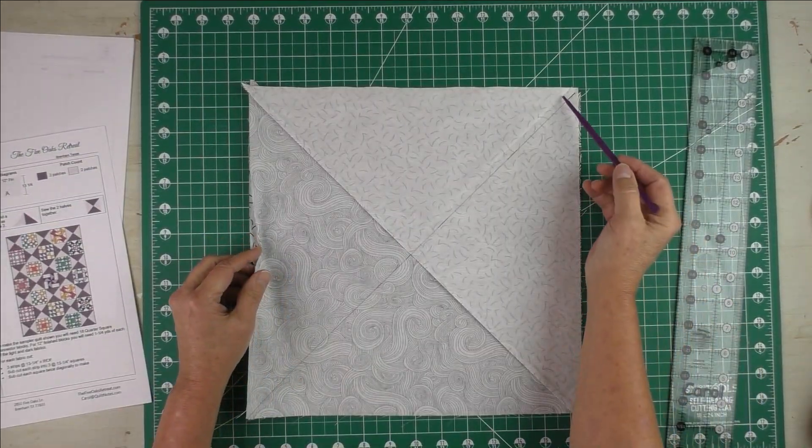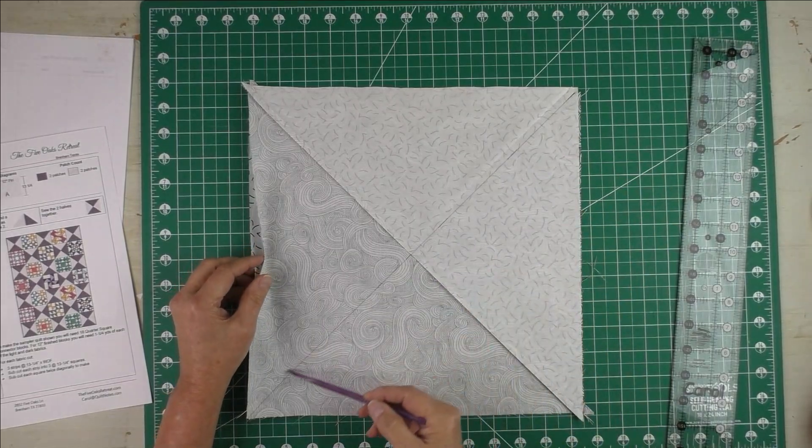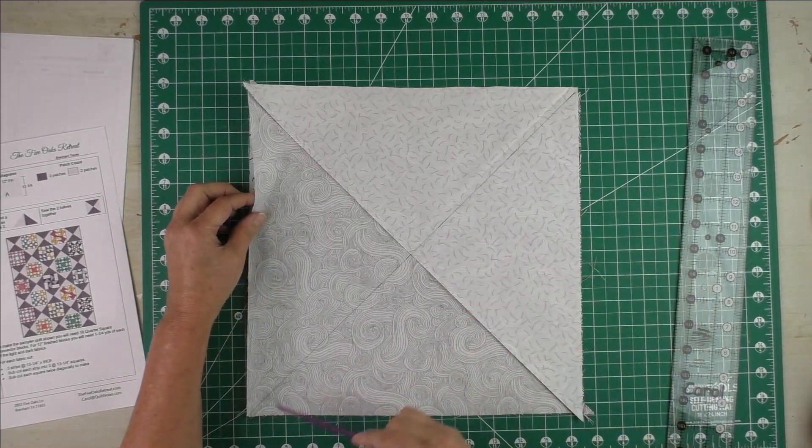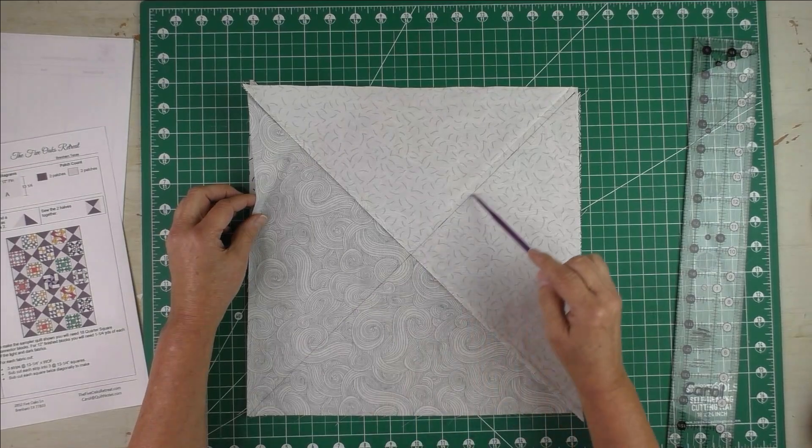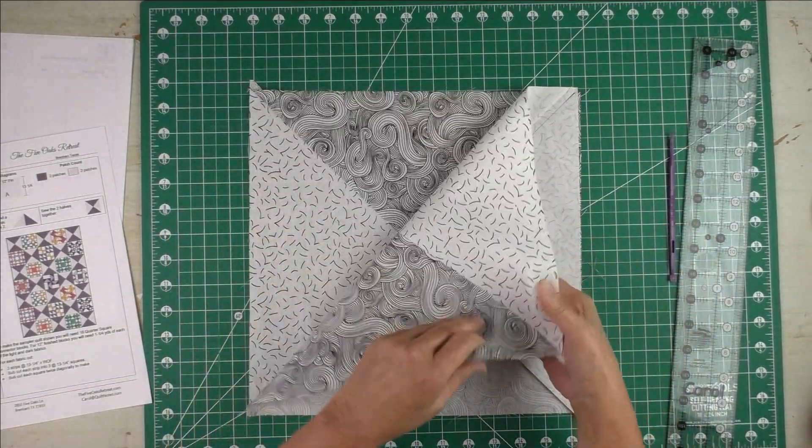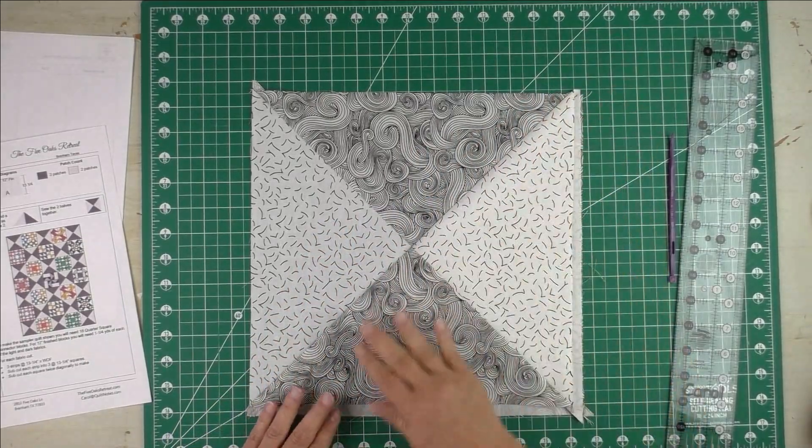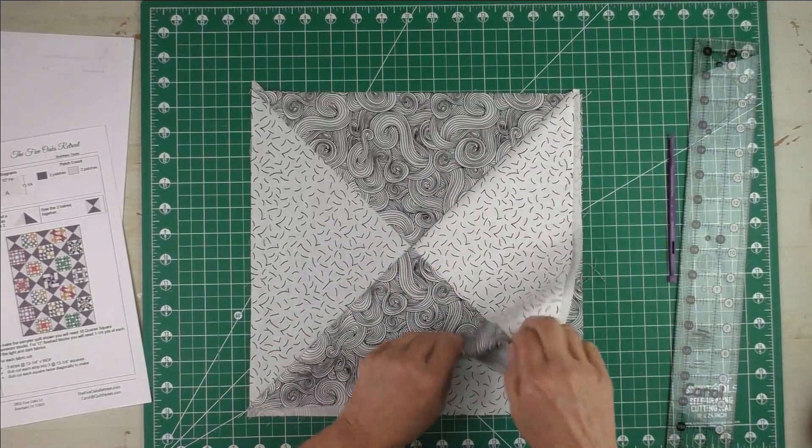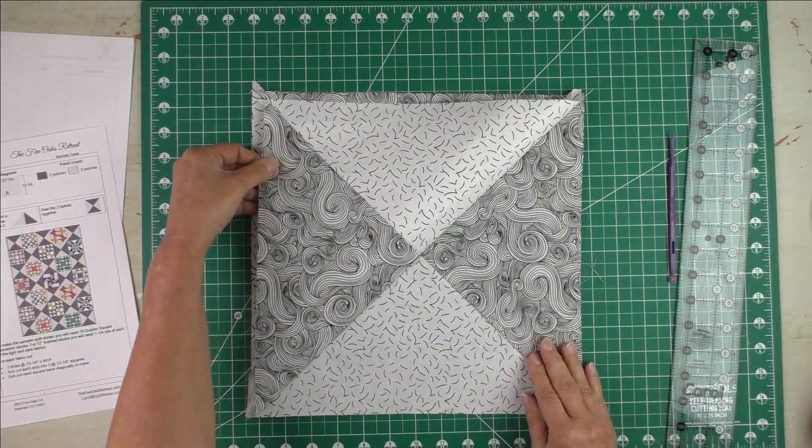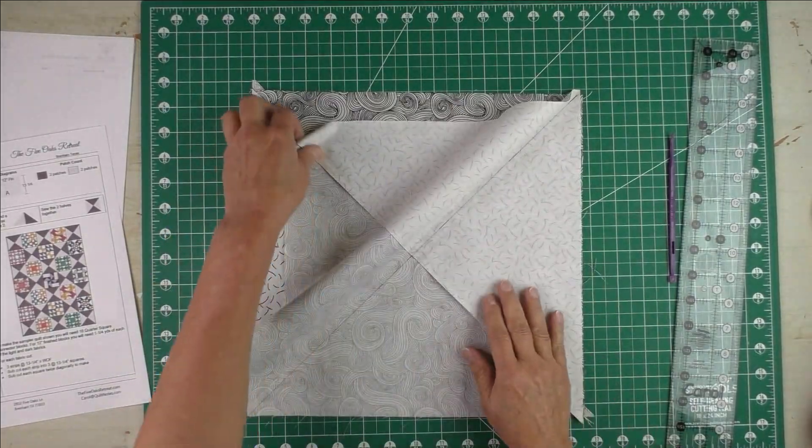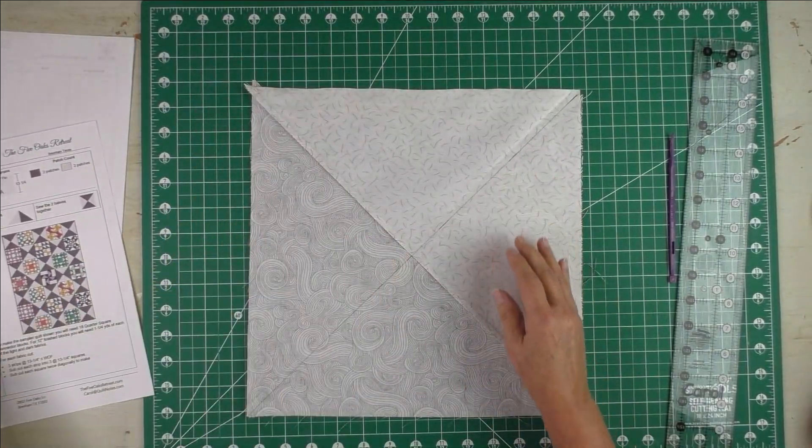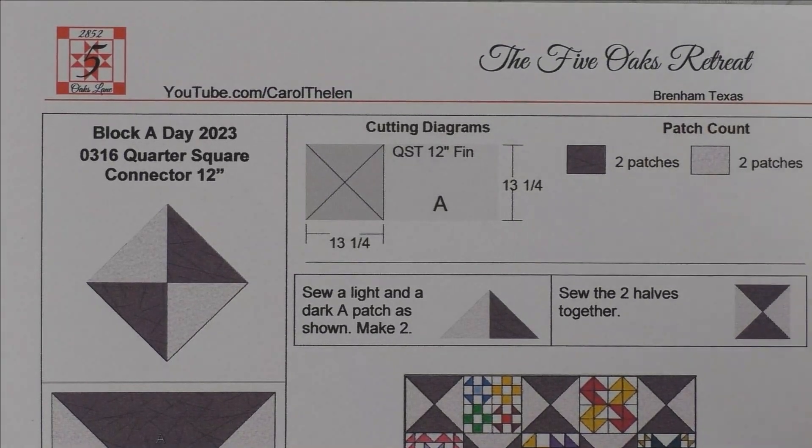So now I have stitched on either side of this diagonal line, and when I cut along the marked line, I'll have two pieces like this, two hourglass blocks just like this. Now if you're not sure about your seam allowance, instead of cutting these patches at thirteen and a quarter, cut them at thirteen and a half, a little bit bigger.